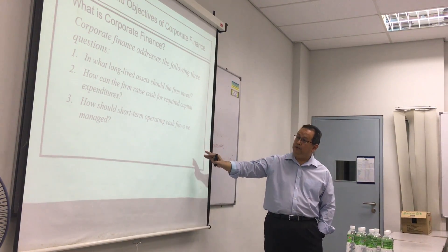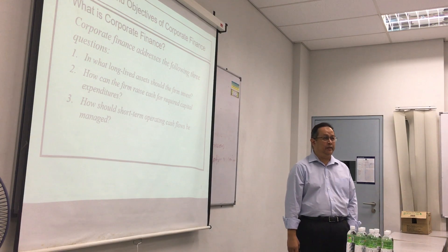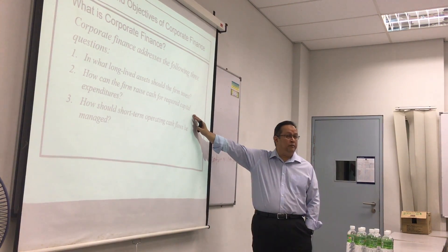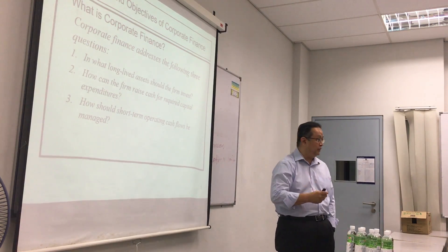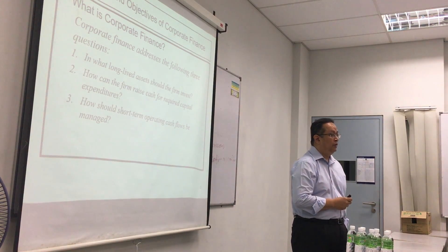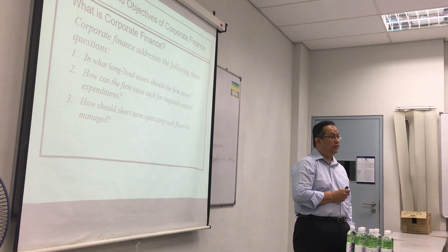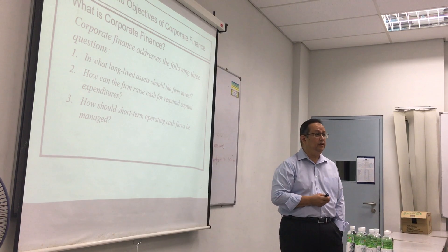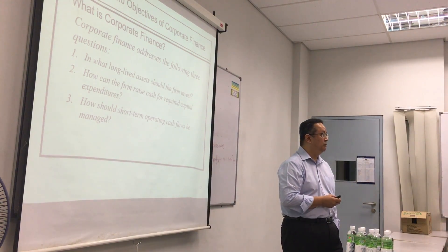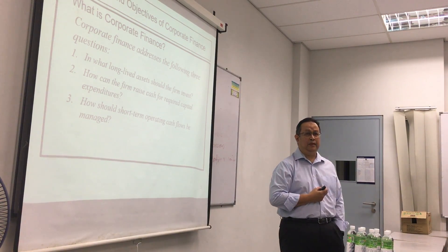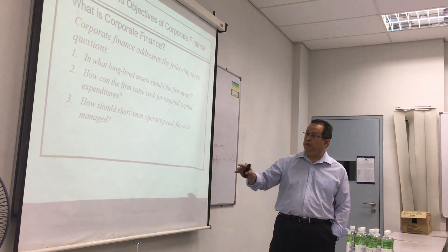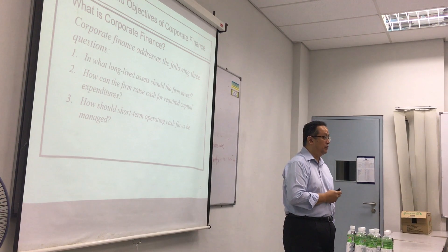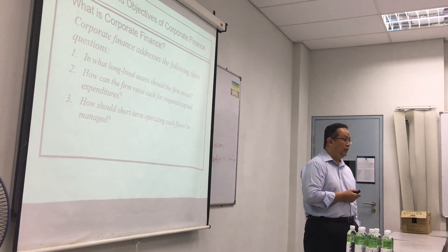And then of course we talk about how short-term operating cash flow should be managed. For the long term, we need to be solvent — we need to survive in the long term. In the short term, we also need to survive, meaning we need to talk about our liquidity — liquidity management in the form of working capital requirements. So we need to invest in working capital as well. This is what we talk about with short-term operating cash flow: how do we manage our working capital, because in the short term we need to maintain liquidity in the business.